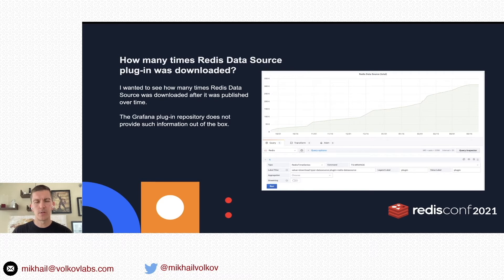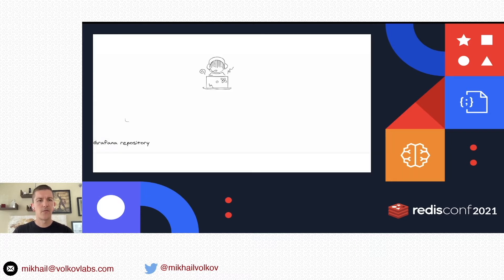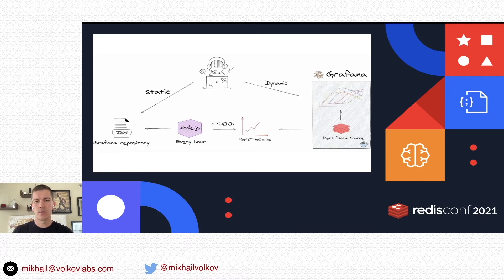When we released the Redis data source, I wanted to know how many times it was downloaded from the Grafana repository. Unfortunately, this information is not supported out of the box, so we collected this data using Redis Time Series. You can access information in the Grafana repository in JSON format, collect that data every hour, store it in Redis Time Series using the ts-add command, then visualize it in Grafana using the Redis data source and querying the data using the ts-range command.